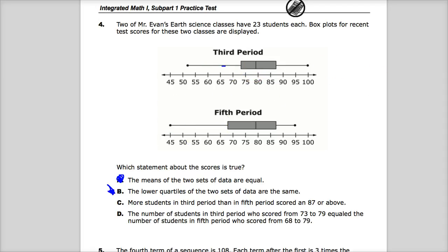Number three, more students in third period than in fifth period scored 87 or above. Well, here's 87 or above. And you could think, oh, this one's all the way up here and this one's only down here. But it speaks nothing to where those particularly are located. It's just telling you the top quarter of values fall between here and here. Except for the fact that they tell you that the classes have 23 students each, which means the quarters of each class are the same. And since they want 87 or above, and that's where the quarter four begins for both groups, it's the same number of kids or same number of students. So no, that's not true.